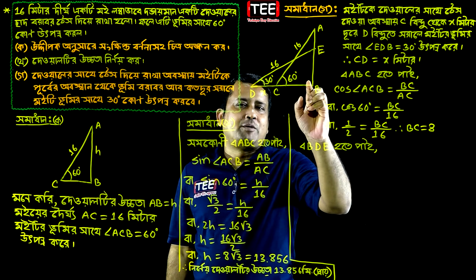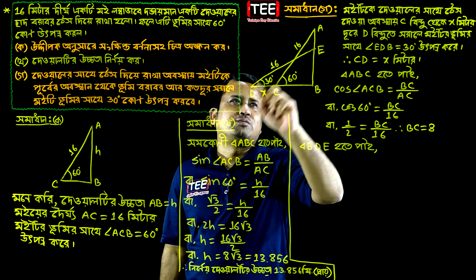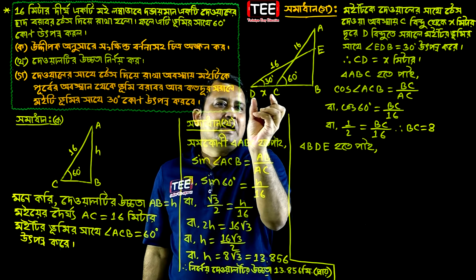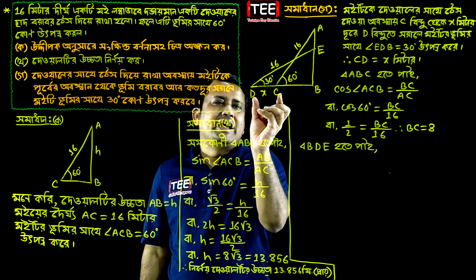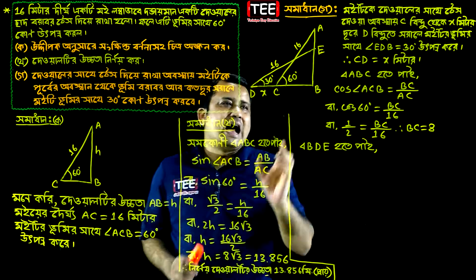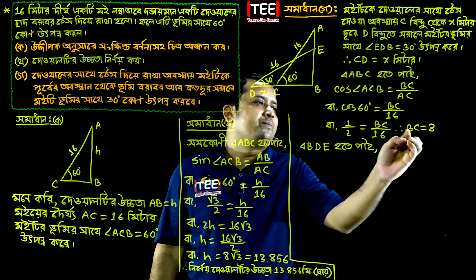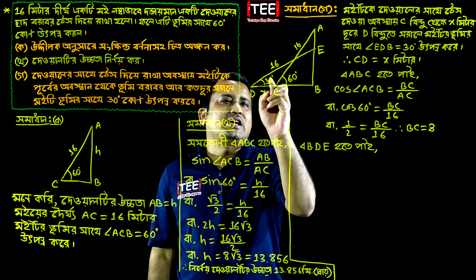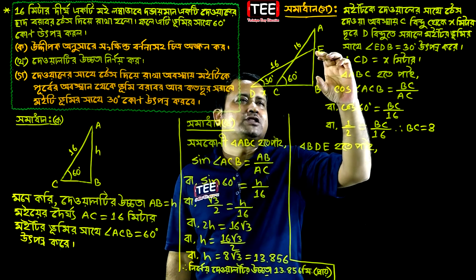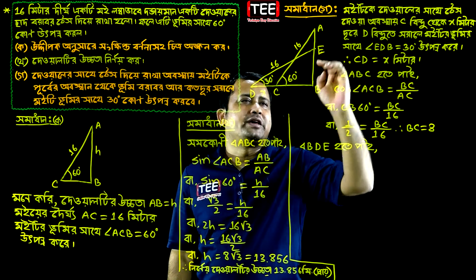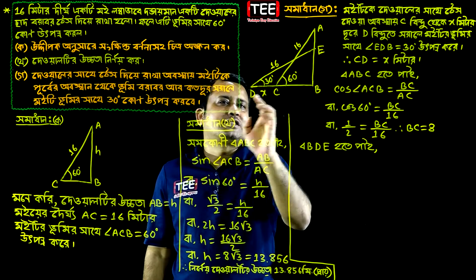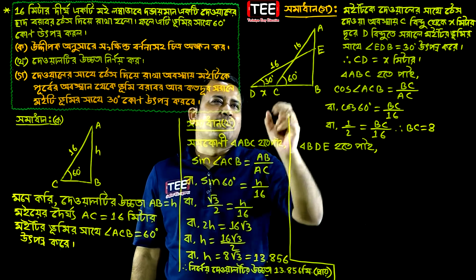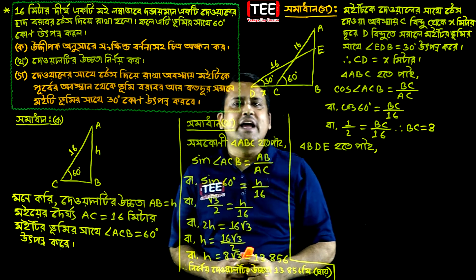So BC is equal to 90 degrees, D, E is equal to 6. And our CD is equal to X. This CD is equal to BC is equal to 8. So BC is equal to BC, D, E, CD.